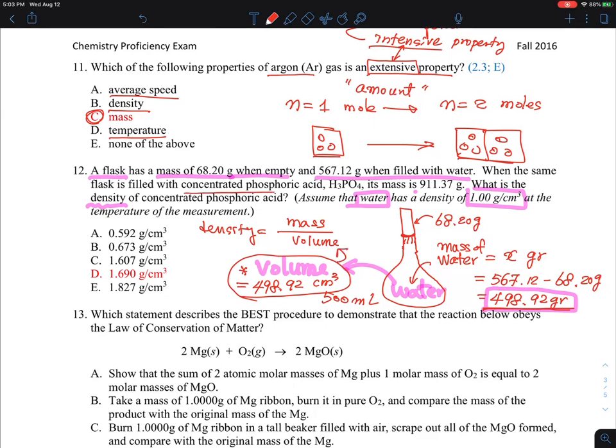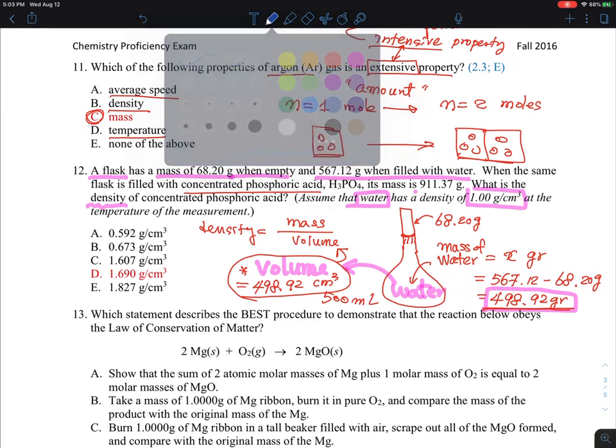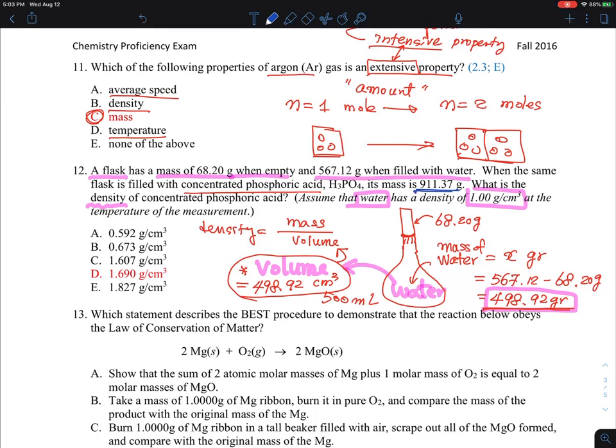For the concentrated phosphoric acid, the mass is 911.37. So therefore, the density is 911.37 grams divided by 498.92 cubic centimeters. If you plug in the numbers, you'll find 1.827 grams per cubic centimeter. So that's the answer. I got this answer, not the other one. Probably this is the correct answer. I need to double check with Dr. Ma, but according to my calculation, E is the correct answer.